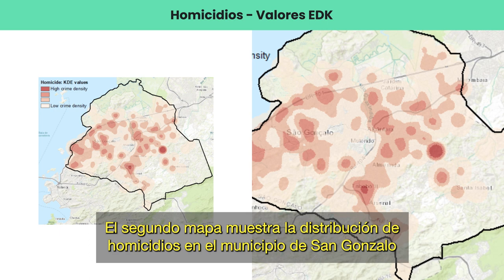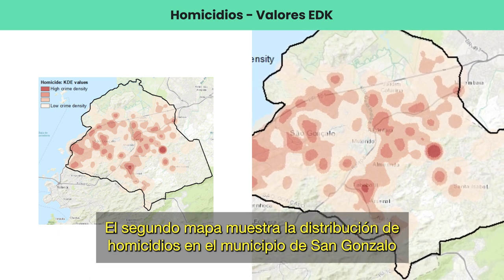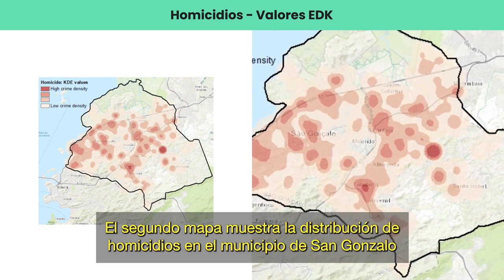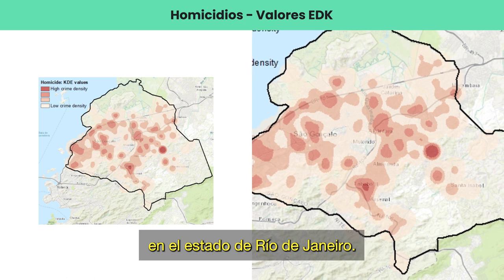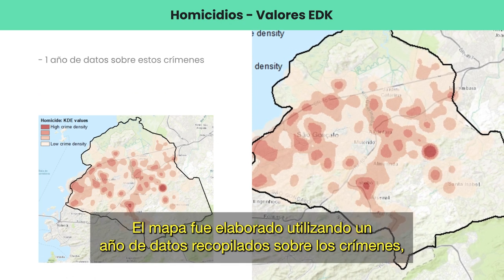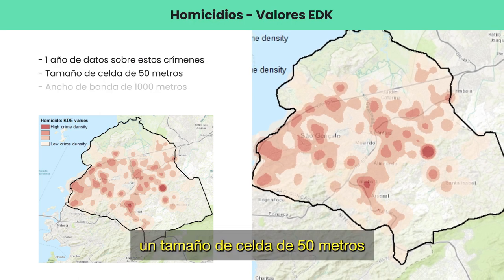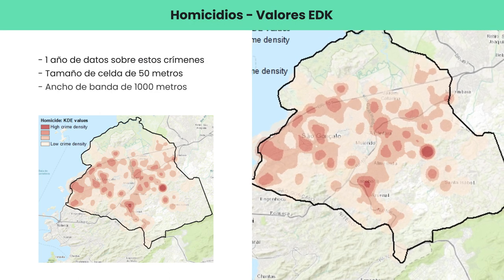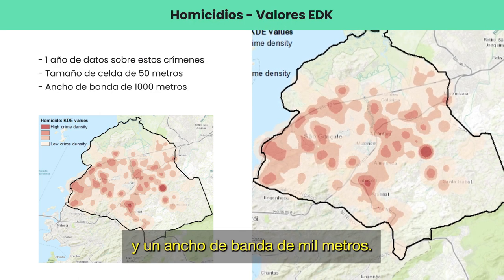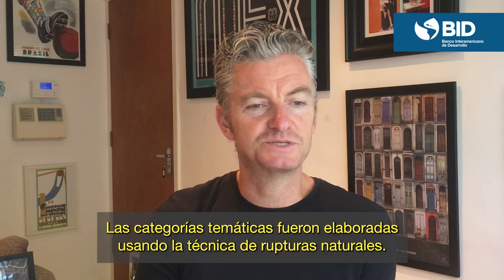The second map shows the distribution of homicides across the municipality of São Gonçalo in the state of Rio de Janeiro. The map was produced using one year of crime data, a cell size of 50 meters and a bandwidth of 1000 meters. The thematic categories were produced using the natural breaks technique.